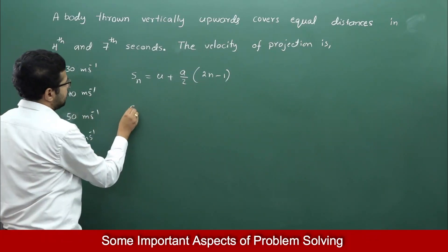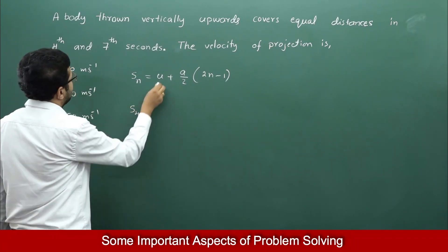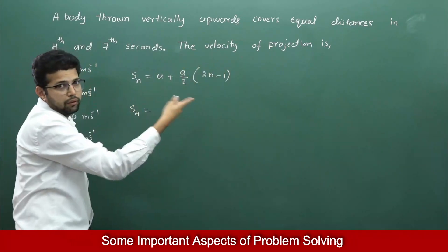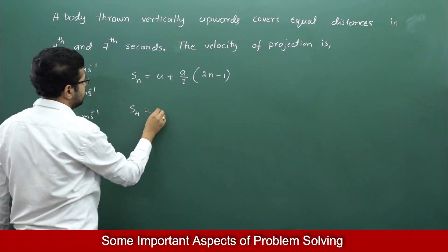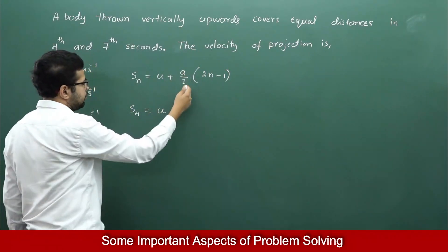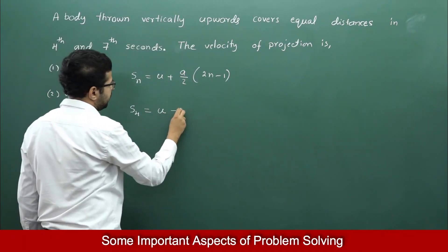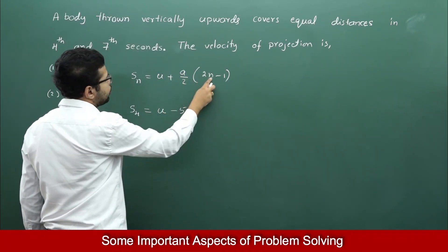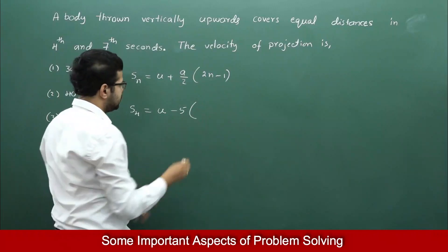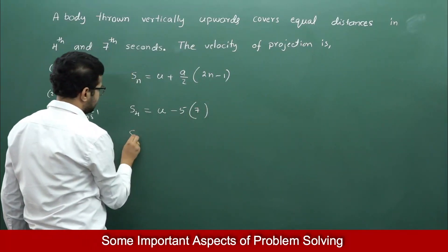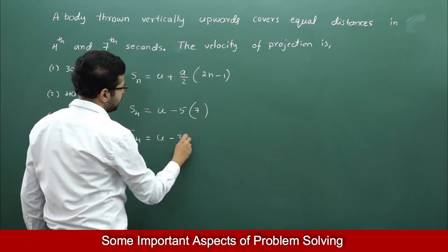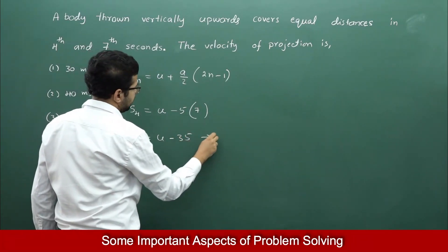S4, the distance travelled in the 4th second, equals u — the initial velocity, which we have to find. Acceleration due to gravity is −10, so −10/2 = −5, multiplied by (2×4 − 1) = 7. So S4 = u − 35. This is equation number 1.